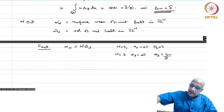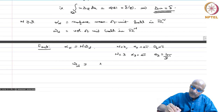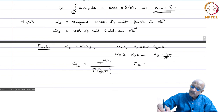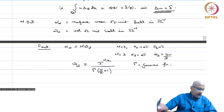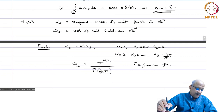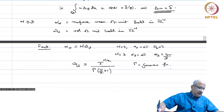The volume ω_n can be given by the formula: ω_n = π^{n/2} / Γ(n/2 + 1), where Γ is the gamma function. We omit the details of this — it is a very interesting calculation we may see later.